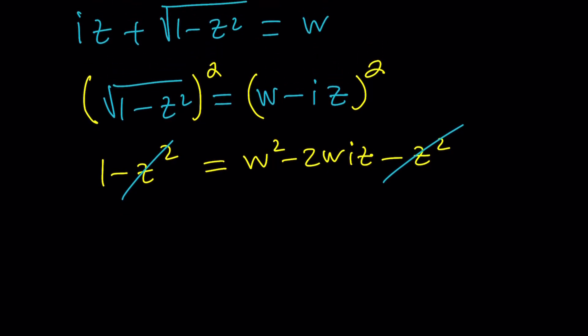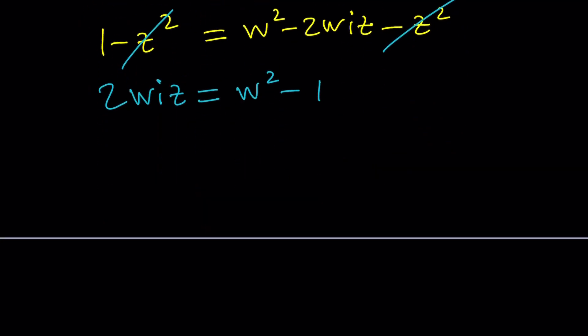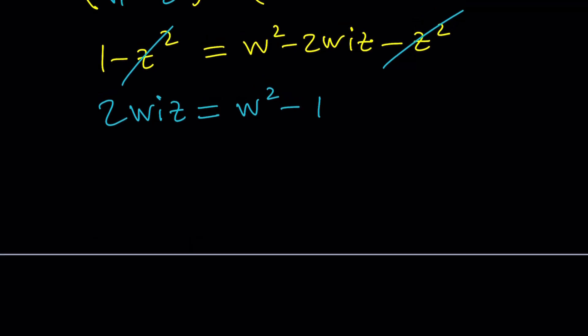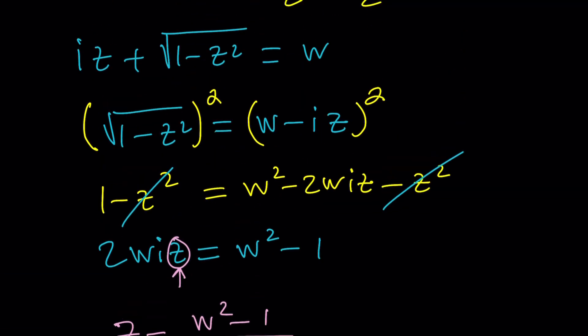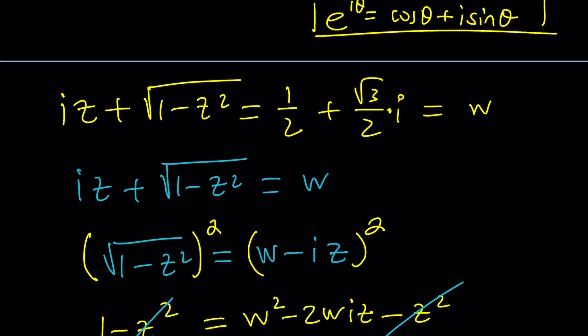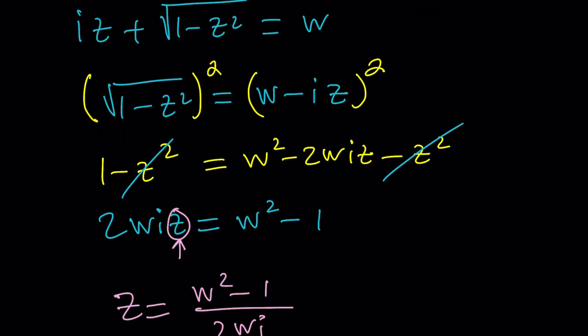On the right hand side, you have to be careful. This is a minus b being squared. So it's going to be w squared minus 2wiz. And then plus i squared z squared. But i squared is negative 1. So it's going to turn into minus z squared. And this is what happens. z squared cancels out, leaving us with something simpler. Now, my goal is to solve for z. So let's isolate z.